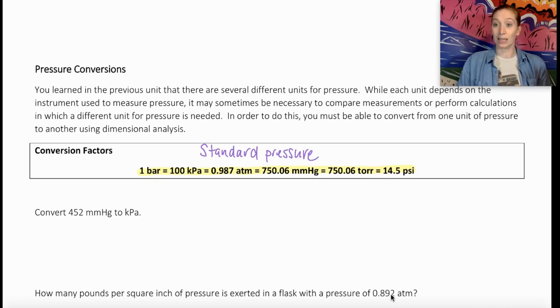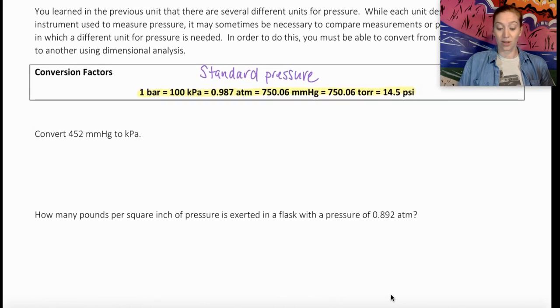And then these are all of its equivalents in different units of pressure measurement. That would be the same as 100 kilopascals, 0.987 atmospheres, 750.06 millimeters of mercury. Hg is the symbol for the element mercury. 750.06 torr, which is, as you can see, equivalent to millimeters of mercury. And then 14.5 psi, that is pounds per square inch. So all we're going to do is convert from one to the other using our same method as we did before.